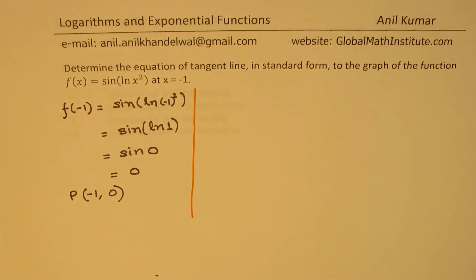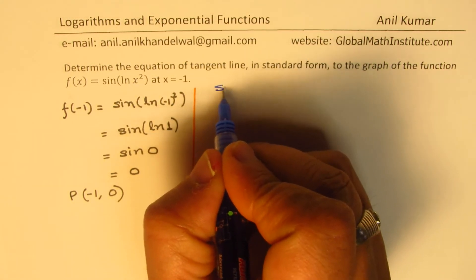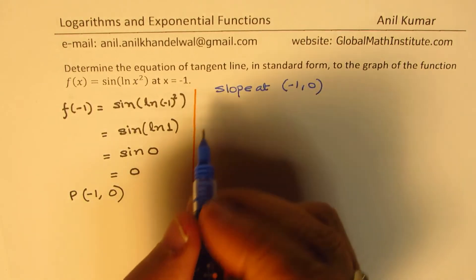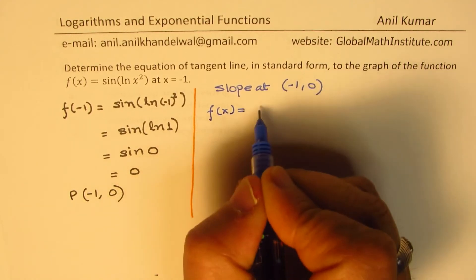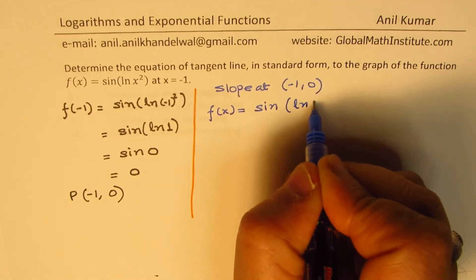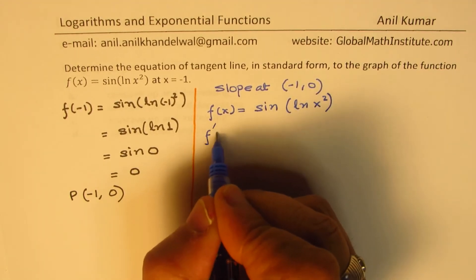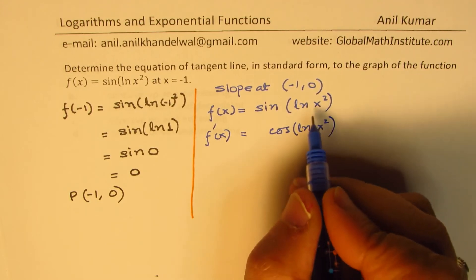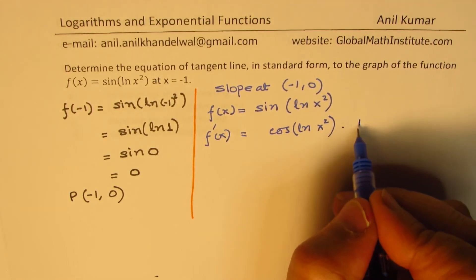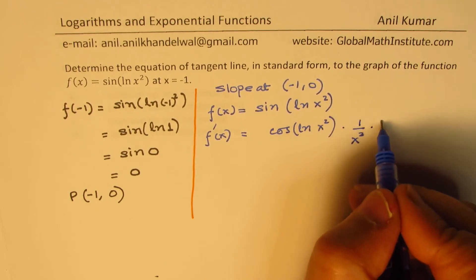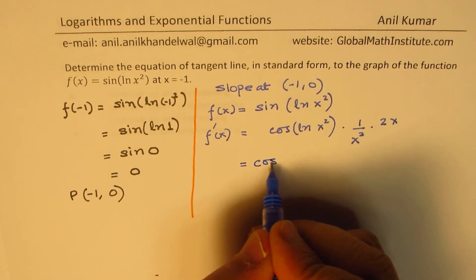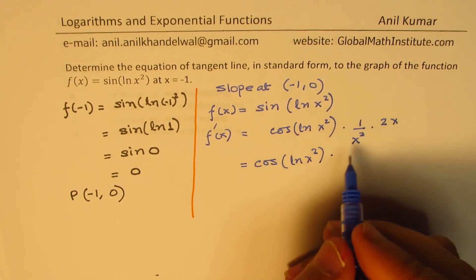Now let us find the slope of the tangent line from the derivative at the point (minus 1, 0). We are given f(x) equals sine of ln(x²). The derivative is cos of ln(x²), times the derivative of the inside function: the derivative of ln(x²) is 1 over x², times the derivative of x² which is 2x. This simplifies to cos(ln x²) times 2 over x.